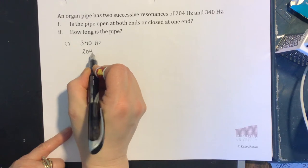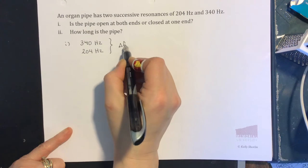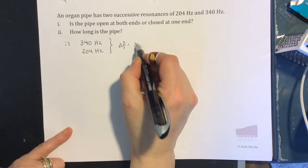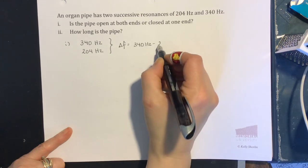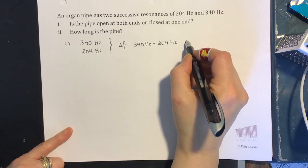That means we can find the difference between the frequencies. Delta F is this frequency take away this frequency, 340 subtract 204. So the difference in the two frequencies is 136 hertz.